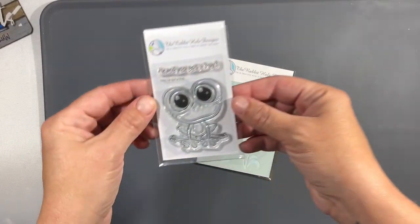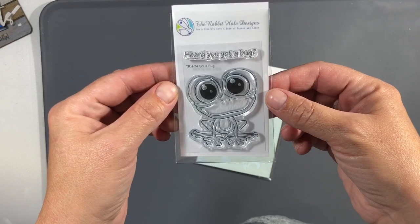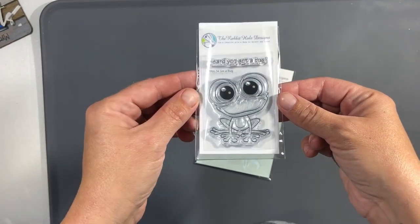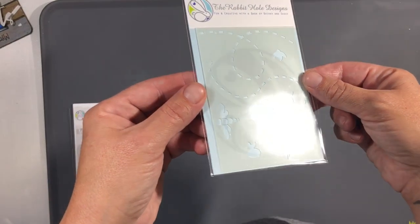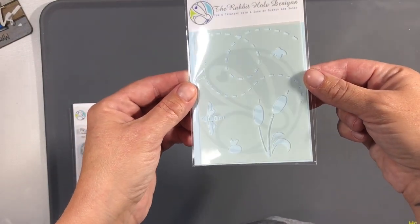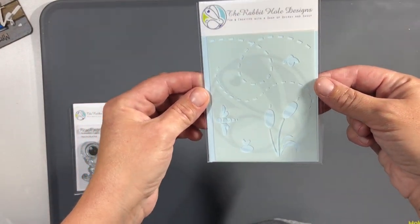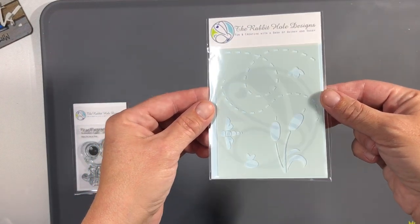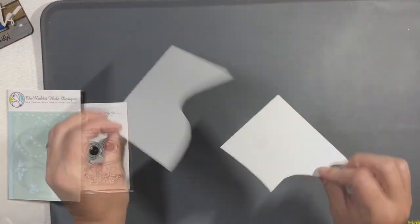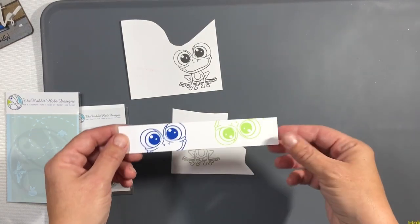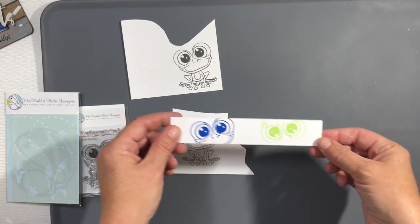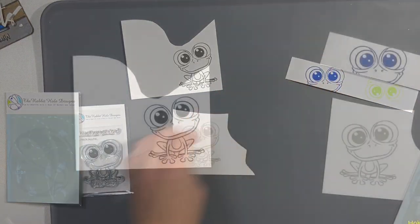Hello everyone, it's Tana. Welcome back to the channel. Today we're going to play with the new mini release from The Rabbit Hole Designs. This cute little frog stamp set is called Got a Bug, and this mini stencil has all these cute little elements that you can put in the background of your big-eyed frog.